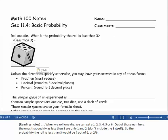Well, a single die has six sides and it has the numbers 1, 2, 3, 4, 5, and 6. Out of those numbers, the ones that qualify as less than 3 are only 1 and 2. We don't include the 3 itself for less than 3. So the probability the roll would be less than 3 is 2 out of 6, or 2 sixths as a fraction.